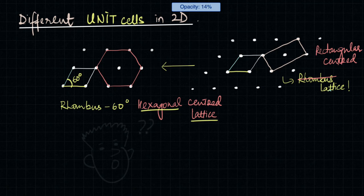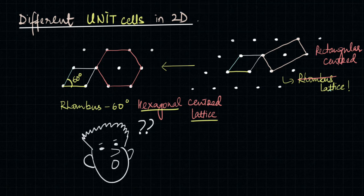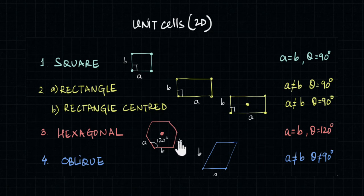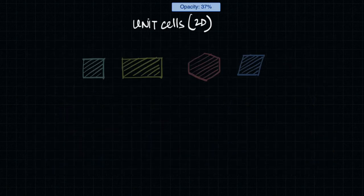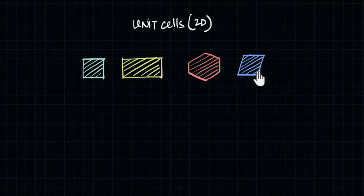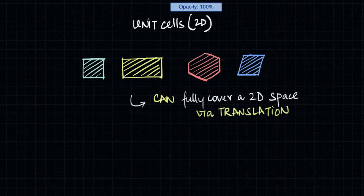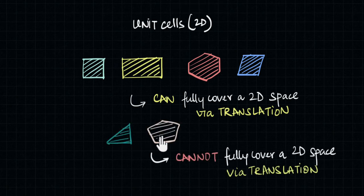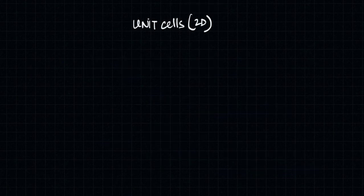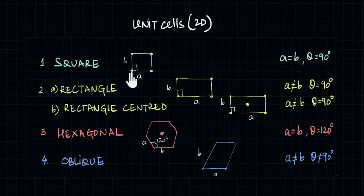It turns out that there are only five different unit cells possible in two dimensions — yes, only five — that can be categorized into four systems. This makes a lot of sense because unit cells by definition should cover the whole lattice via translation. A square, a rectangle, a hexagon, and an oblique are the only fundamental shapes that can fully cover a 2D area only via translation. Other shapes like triangles and pentagons cannot, so a triangle and a pentagon can never be a unit cell. Clearly there can only be these four different systems of unit cells in two dimensions.